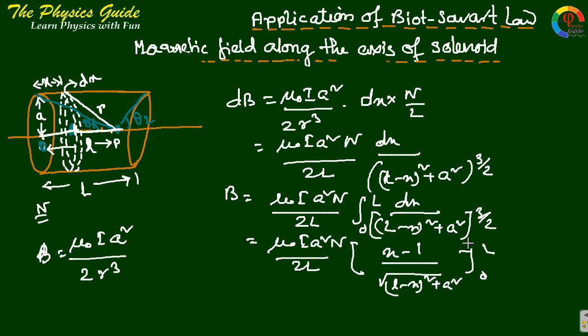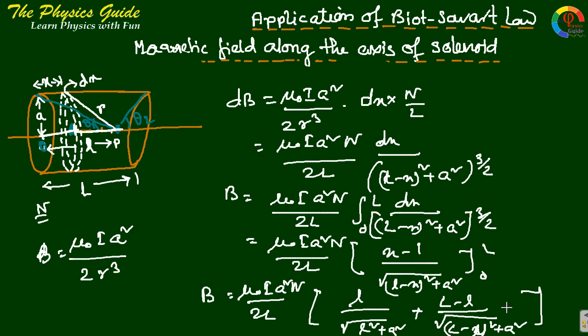Limit 0 to L. So putting this limit we get B equals mu0 I A squared N by 2L times L by root over L squared plus A squared plus L minus L by root over L minus L squared plus A squared. So this is our solution.